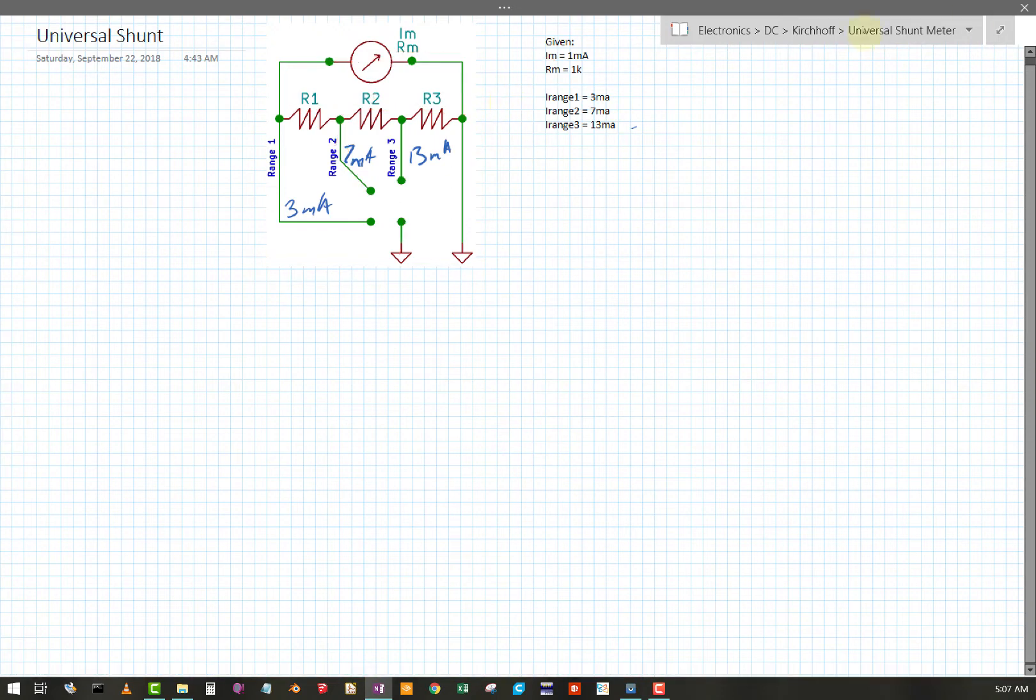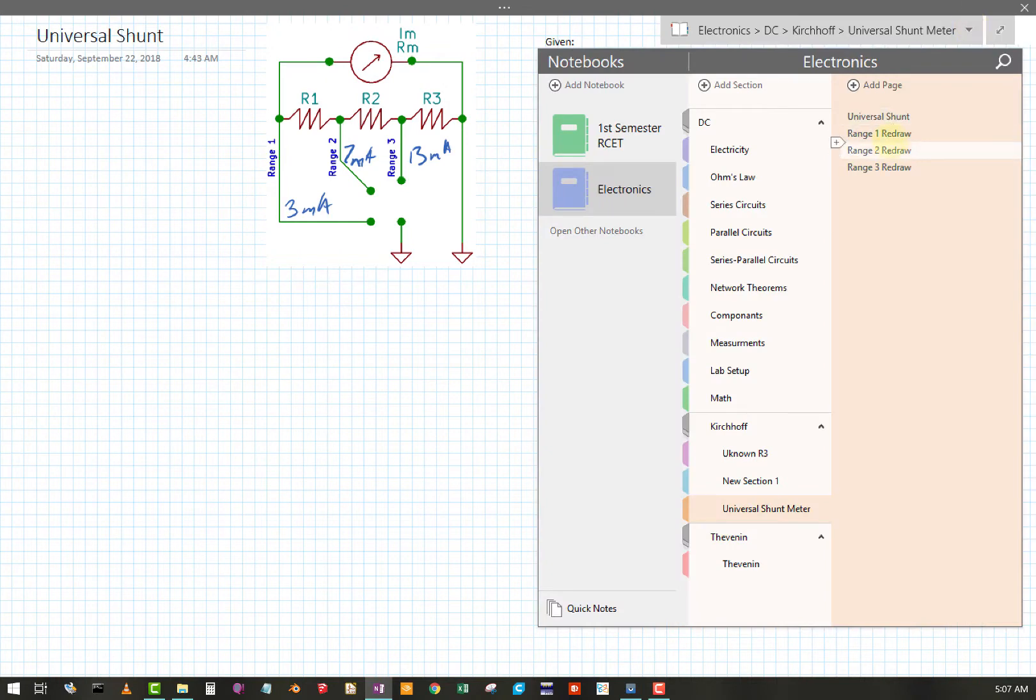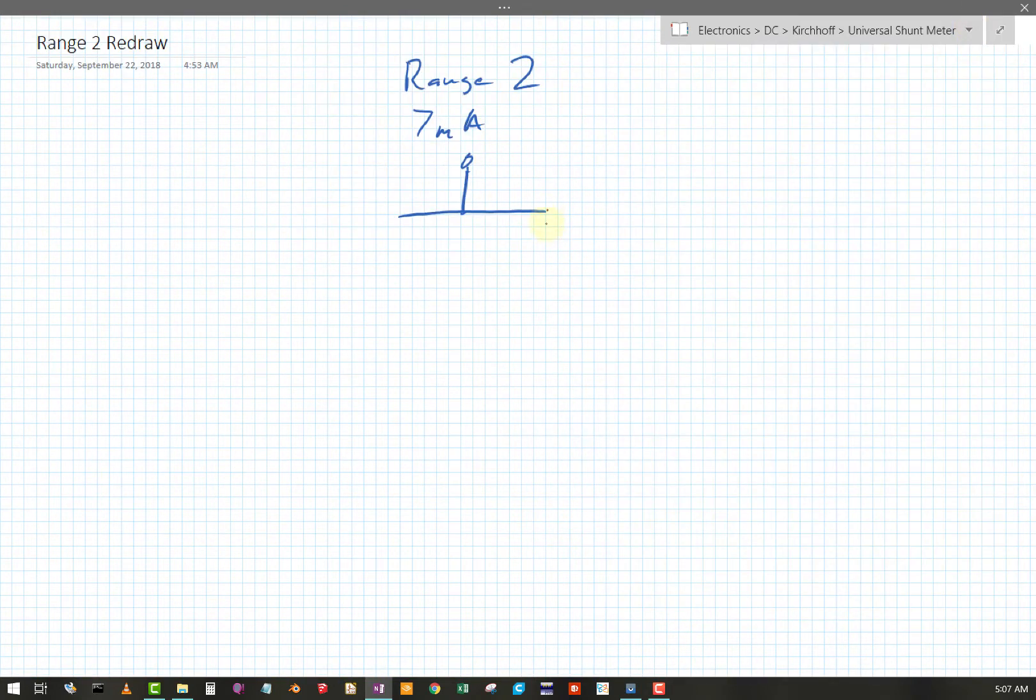So practice doing those redraws on your own, but look at mine if you need the reference. Okay, but now, whoops, get some blue back on here. Okay, now we've got R1 over here, if you noticed, that meter still in that branch. Okay, and now we've only got R2, which we don't know, and R3 over here, which we don't know. Okay, there's my range two redraw, seven milliamps, and then here's my other meter lead.